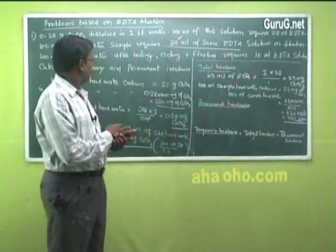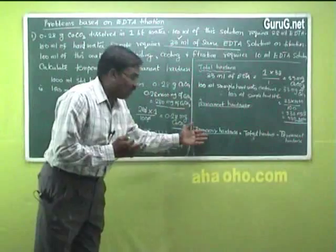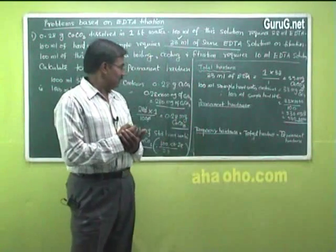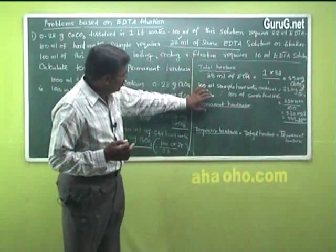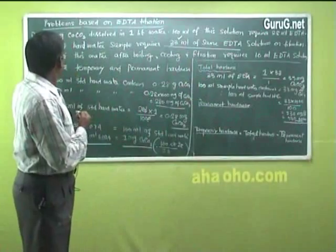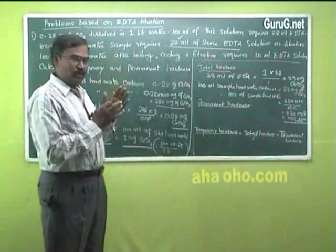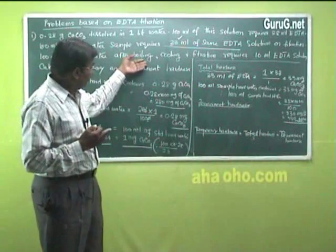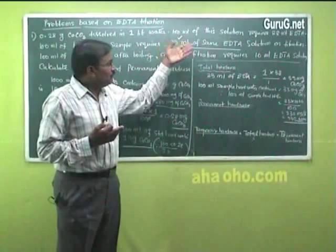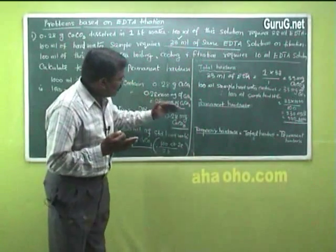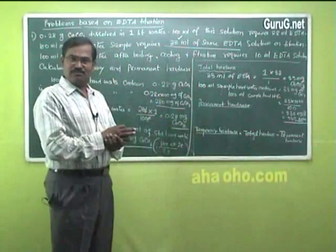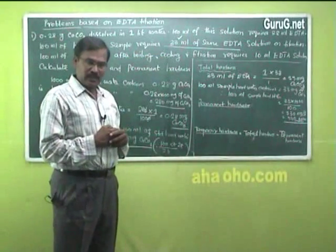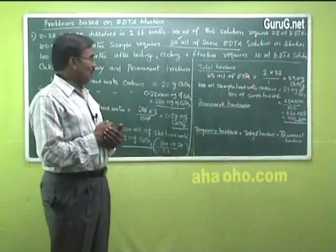We have obtained total hardness of 330 mg/L. Now, to get permanent and temporary hardness: total hardness is the sum of temporary and permanent hardness. By boiling 100 ml of this water, temporary hardness can be removed, as the temporary hardness-causing substances are converted into precipitate. After cooling and filtering, the filtrate contains only permanent hardness.